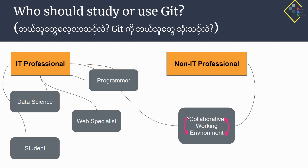We have marketing — the marketing team is happy to use GitHub for their proposals and documents, such as Word files, Excel files, and so on, under version control for the online marketing team.